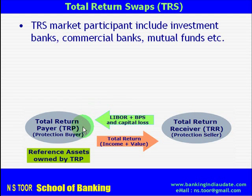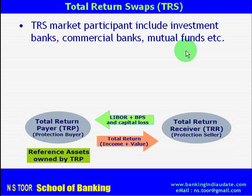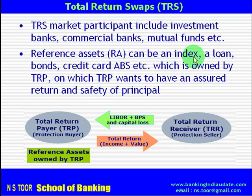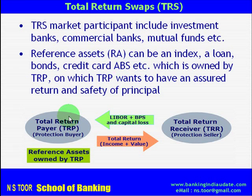In the TRS market, participants include Investment Banks, Commercial Banks, and Mutual Funds. They all basically create reference assets and want to cover those reference assets. The reference asset can be in the form of an index, a loan, a bond, or a credit card ABS. It is owned by TRP, on which the TRP wants to have assured return and safety of principal.